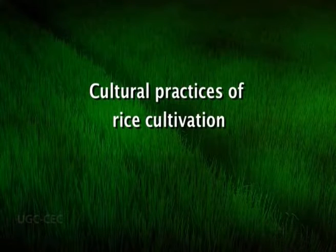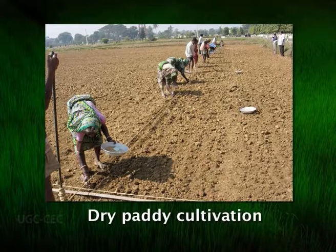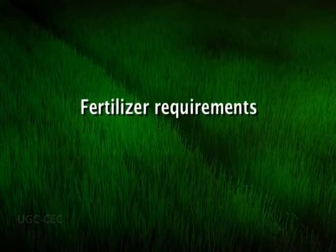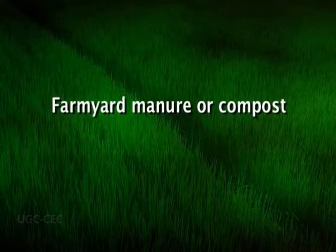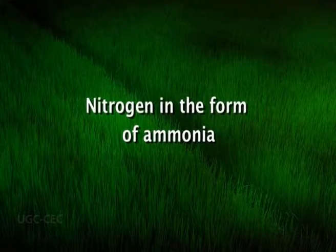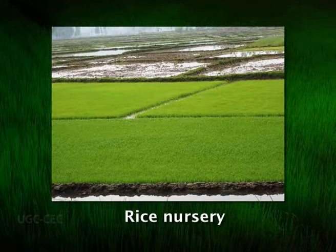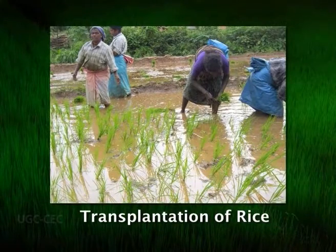Cultural practices of rice cultivation include: first, dry paddy cultivation, in which the crop is raised on dry ground like other cereals; and second, wet paddy cultivation, wherein the crop is grown under an adequate supply of water. Fertilizer requirements: before the flooding and planting of rice seedlings, fields are fertilized with either farmyard manure or compost. Rice responds extremely well to nitrogenous and phosphate fertilizers; it takes ammonia as a source of nitrogen. In wet paddy cultivation, the seeds are generally sown first in a small nursery and later the seedlings are transplanted into flooded fields.